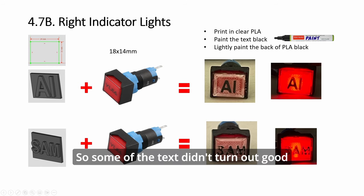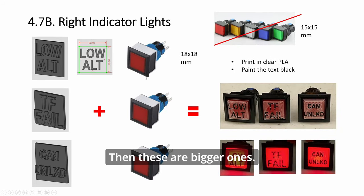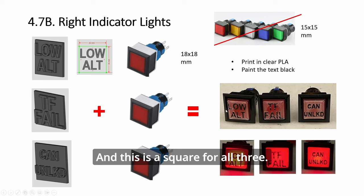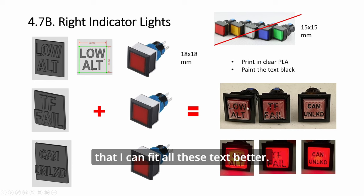Some of the text didn't turn out good because I was having problems with my 3D printer, so things got a bit distorted. These are bigger ones - note this is 18 by 14, so it's slightly shorter. This is a square for all three. I didn't use this 15 by 15, I find it a bit small. I deliberately chose something bigger so I can fit all these texts better. If it's small, the text is harder to read.